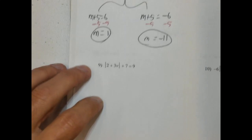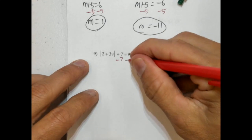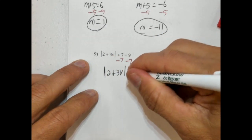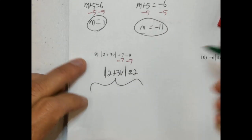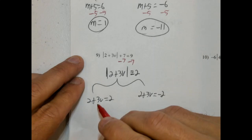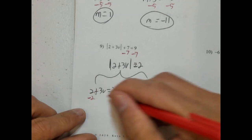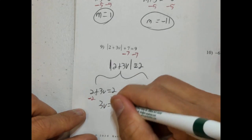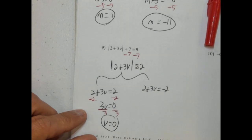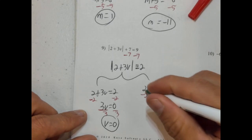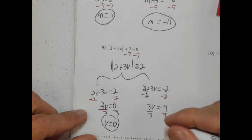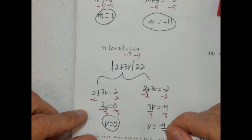Number 9: we have this 7 here — we're going to get rid of that using the inverse operation. So the absolute value of 2 plus 3v equals 2, because 9 take away 7 is 2. We split and rewrite: 2 plus 3v equals 2, and 2 plus 3v equals negative 2. For the first equation, subtract 2 from both sides — 3v equals 0, divide by 3, v equals 0. For the second, subtract 2 — 3v equals negative 4, divide by 3, v equals negative 4 thirds. Those are our two answers.